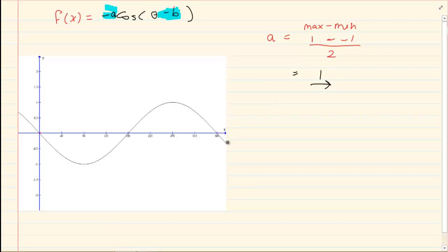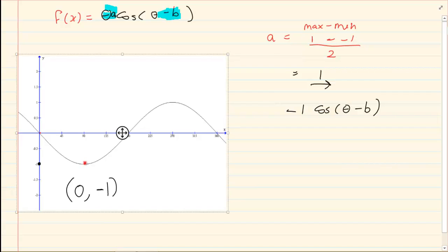But do you notice the graph, they tell you it is minus 1 cos alpha minus beta. But how do I get b? We need to look at the cos graph. Now the cos graph, if it was an upside down graph, the starting point of a cos graph should have been 0 and minus 1. So it should have actually started here. If it was upside down, that's where it should have started. But now it is starting at 90.